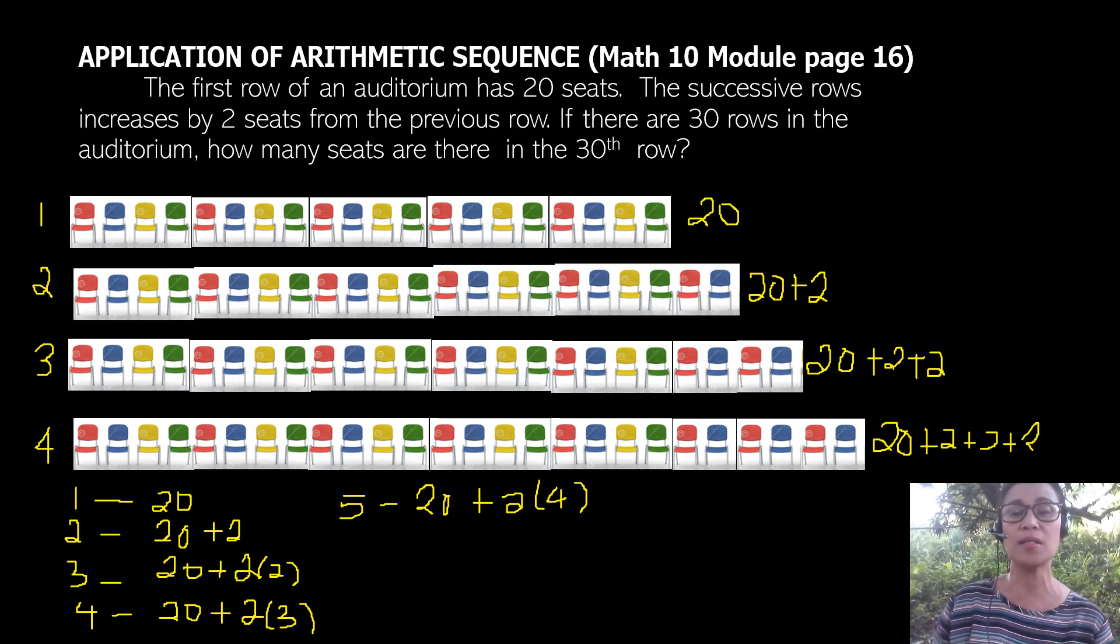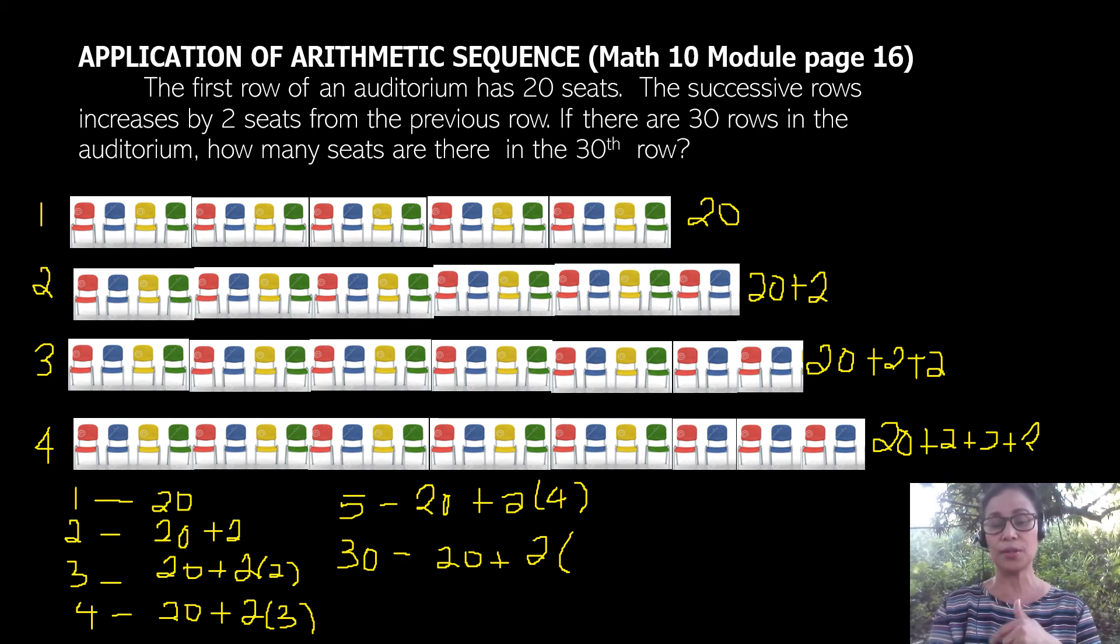The question is, how many seats are there in the 30th row? Following the pattern, the 30th row has this solution: 20 plus 2 multiplied, not by 30, but by 29.